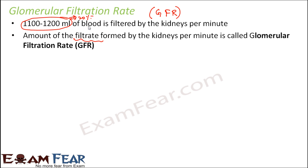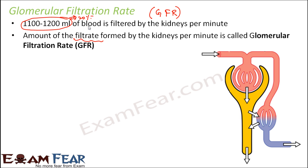In one complete day the GFR is around 180 litres. So this is the glomerulus where glomerular filtration takes place — blood enters through the afferent arteriole, glomerular filtration occurs, and the amount of filtrate which moves into the Bowman's capsule per minute is the glomerular filtration rate.